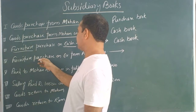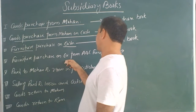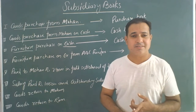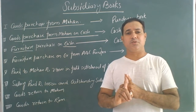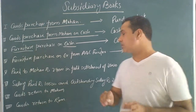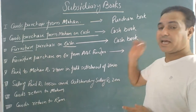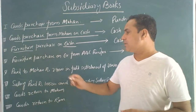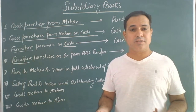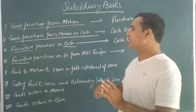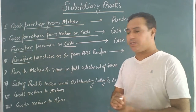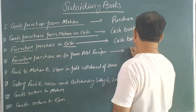Furniture purchased on credit from ABC Furniture: here the furniture is not purchased in cash, so it will not go to the cash book. This is furniture, not goods, so we cannot record it in the purchase book. So where does it go? It goes to the general journal.